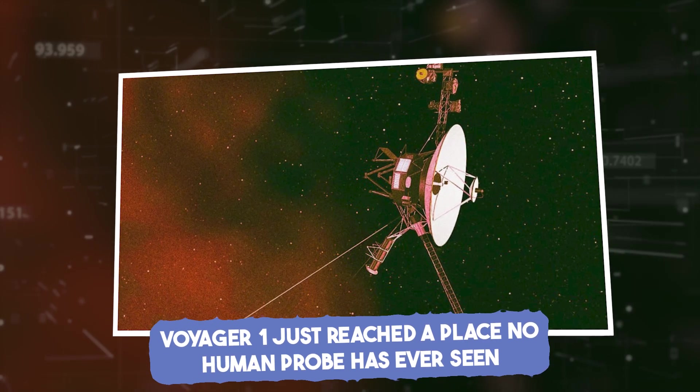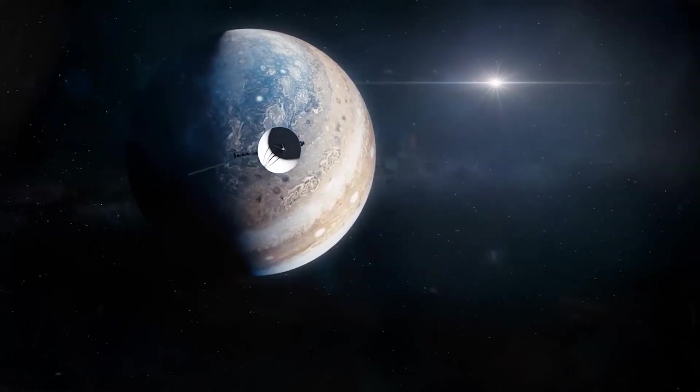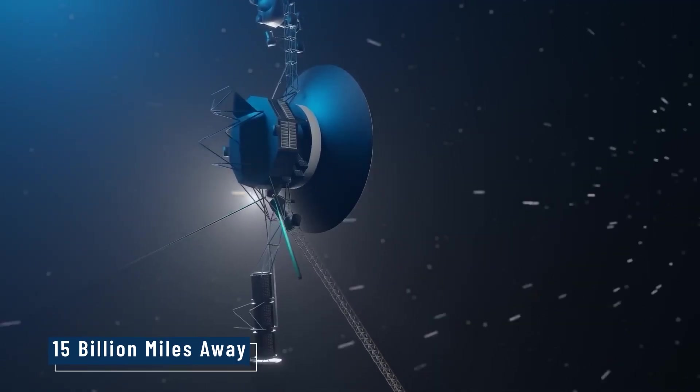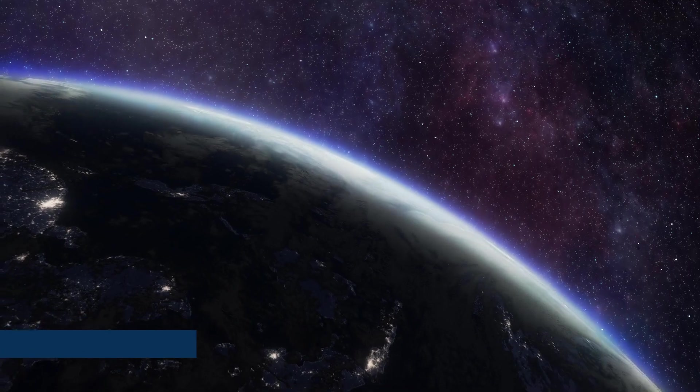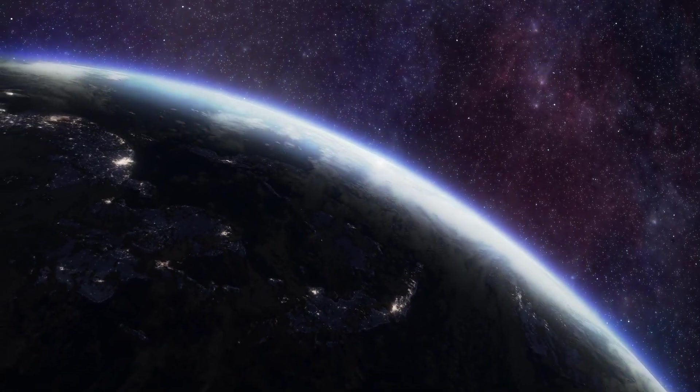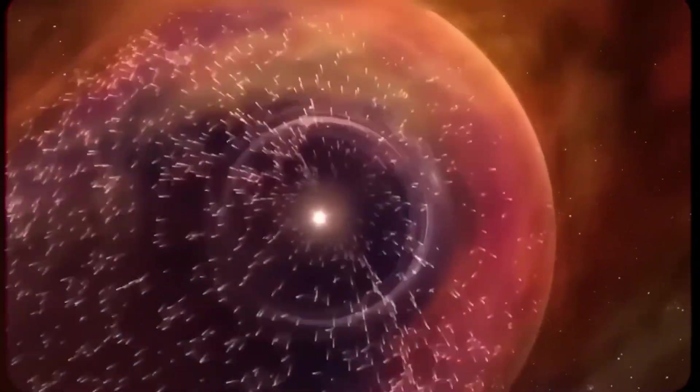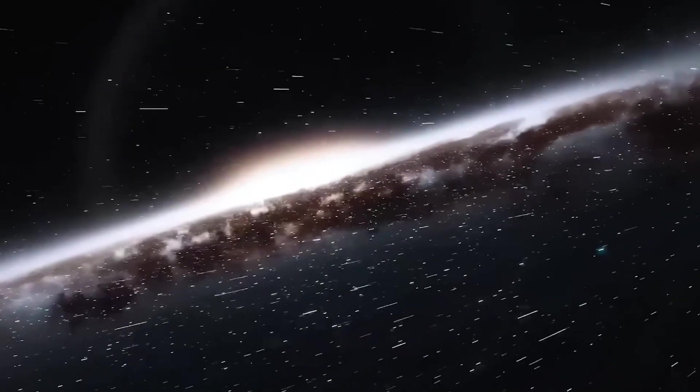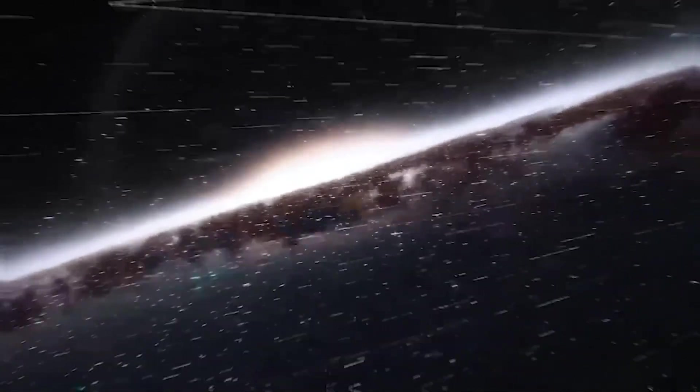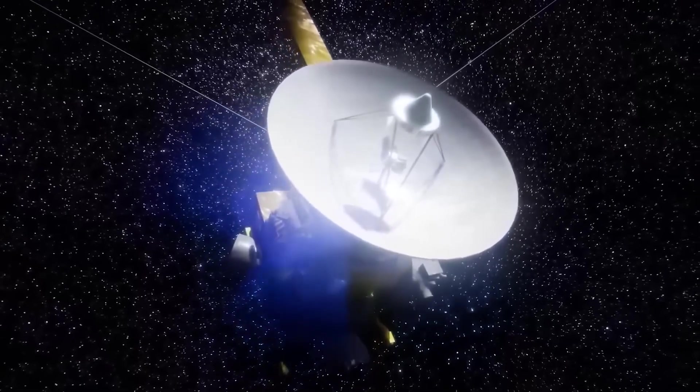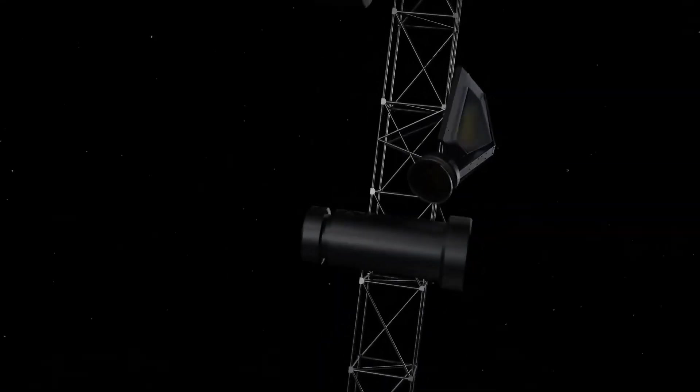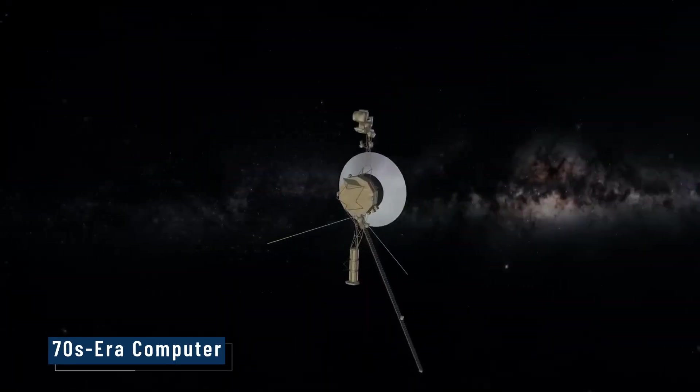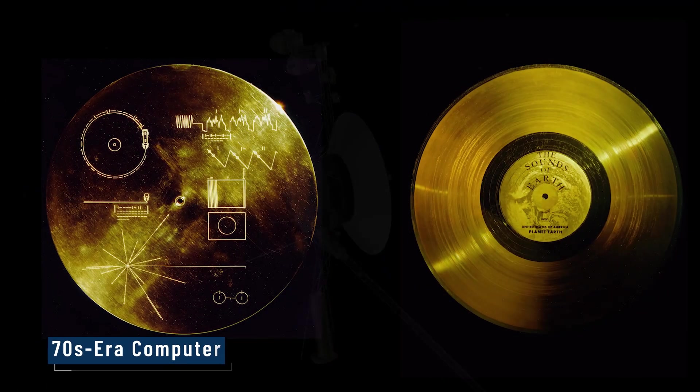Voyager 1 just reached a place no human probe has ever seen. Voyager 1 is the farthest human-made object from Earth, over 15 billion miles away. That's 160 times farther than the distance between Earth and the Sun. And now it's outside the protective shell of the solar system, traveling through what scientists call interstellar space. It's not just in deep space, it's in the space between stars. It's the first machine in history to do so, carrying only a handful of instruments, a 70s-era computer, and a golden record for aliens.